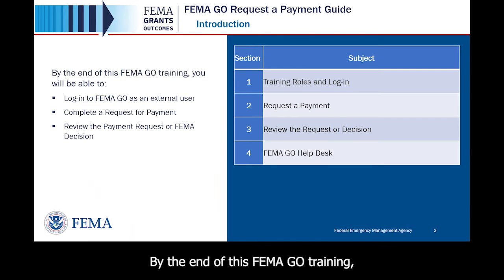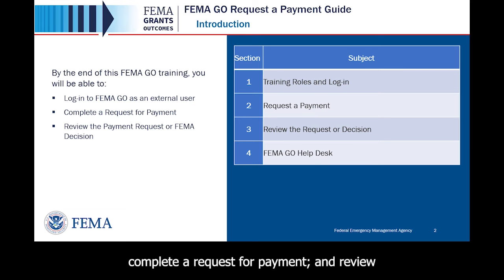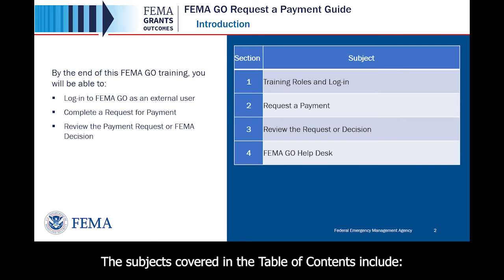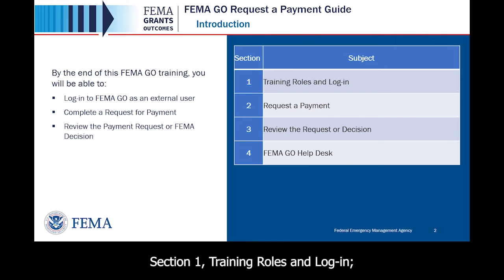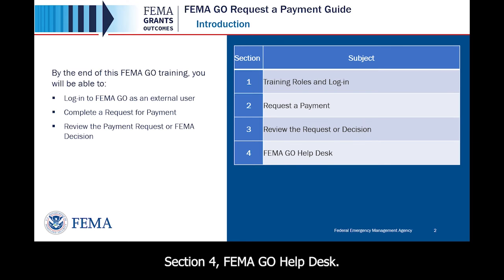By the end of this FEMA GO training, you will be able to log in to FEMA GO as an external user, complete a request for payment, and review the payment request or FEMA decision. The subjects covered in the Table of Contents include Section 1: Training Roles and Login, Section 2: Request a Payment, Section 3: Review the Request or Decision, and Section 4: FEMA GO Help Desk.